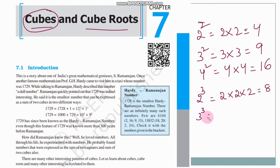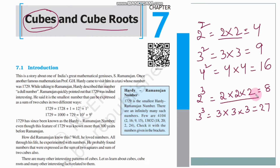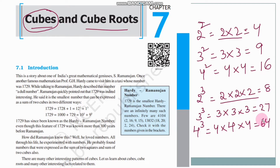For 3 cube, we multiply 3 three times: 3 into 3 into 3. 3 times 3 is 9, and 9 times 3 is 27. So 3 cube is 27. The difference between square and cube is that for square we multiply 2 times, and for cube we multiply 3 times.